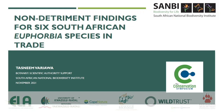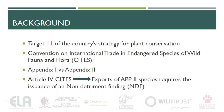Hi, my name is Tasneem and I'll be presenting non-detriment findings for six South African Euphorbia species in trade. Target 11 of the country's strategy for plant conservation requires that no species of wild plant be endangered by international trade. CITES provides a mechanism for regulating international trade in species of wild plants to ensure that the trade is sustainable. Species are typically listed on Appendix 1 or Appendix 2 of CITES, and this determines the level of regulation to which they are subjected.